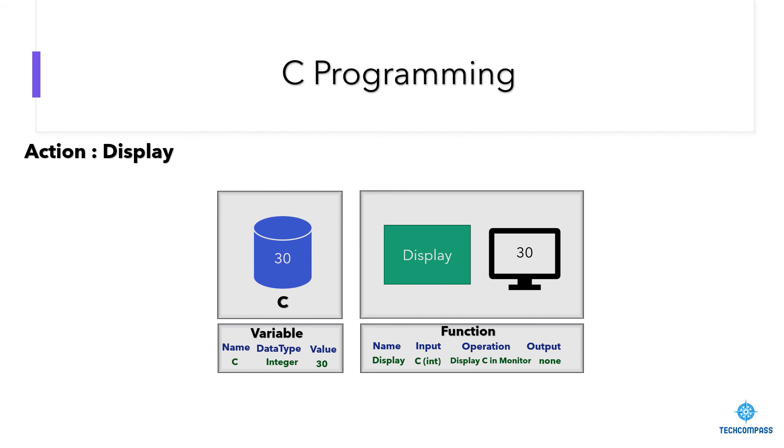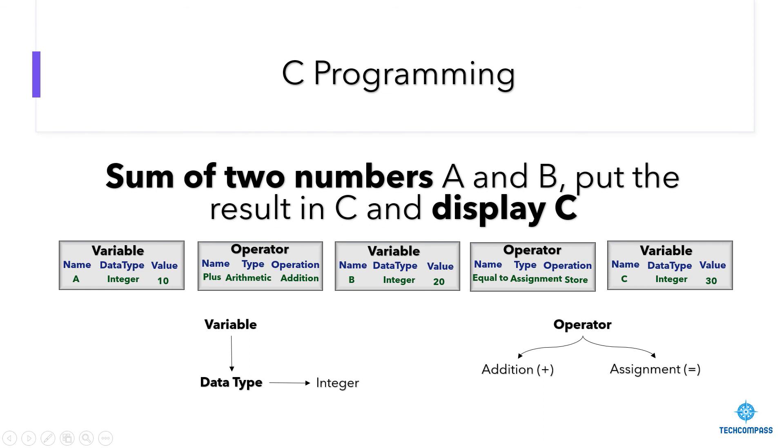You can easily understand that sum of two numbers A and B put the result in C and display C. Action requires concepts like variable, operators and variables of type integer. The operator has different operations like arithmetic and assignment. We are using plus and equal to operator for that. Just for a small task, these many things are getting involved. Before going into programming, it is good to know what is variable, what is operator, what is data type. What I wanted to say is, whatever programming task you take, you have to divide and see what are the things you require to achieve the task. For that reason, we have done this exercise.